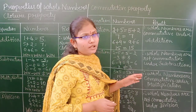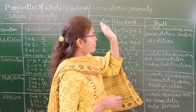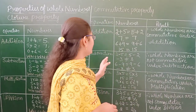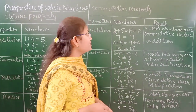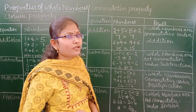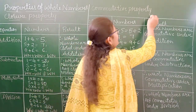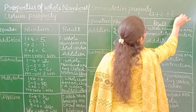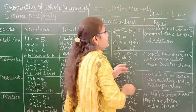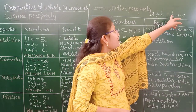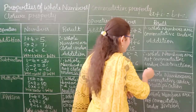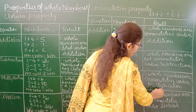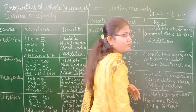Overall, whole numbers are commutative under addition and multiplication, but not under subtraction and division. The general form: under addition, A plus B equals B plus A; under multiplication, A times B equals B times A.